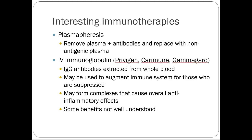Immunotherapy is a growing area. One technique is plasmapheresis — removing a patient's plasma to extract toxins and antigens, then replacing it with non-antigen plasma. Alternatively, IVIG — intravenous immunoglobulin — is a blood product where IV antibodies extracted from whole blood are injected. You can augment the immune system for those who are suppressed or form complexes to create an overall anti-inflammatory effect, though we don't fully understand all the mechanisms.